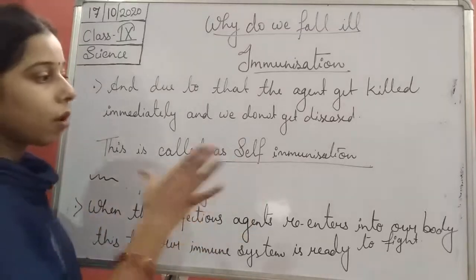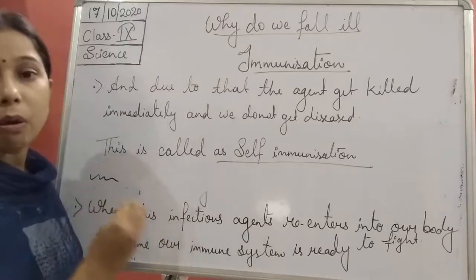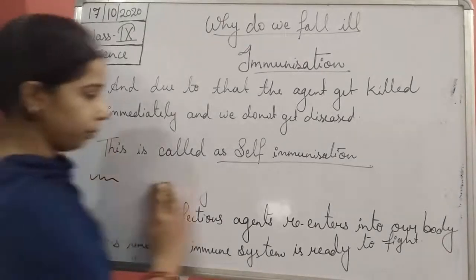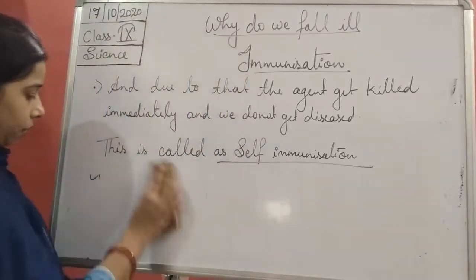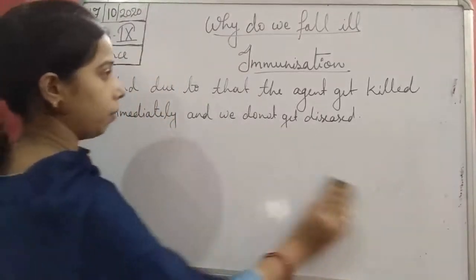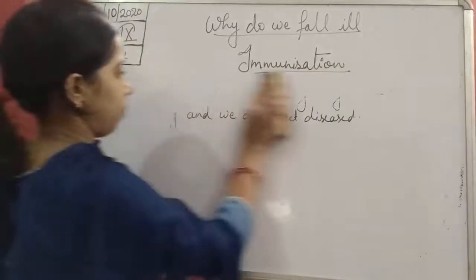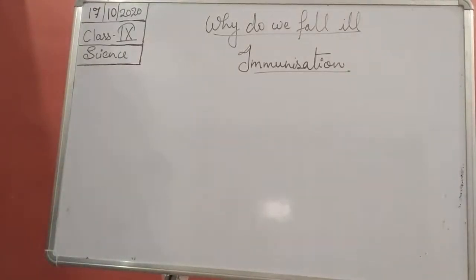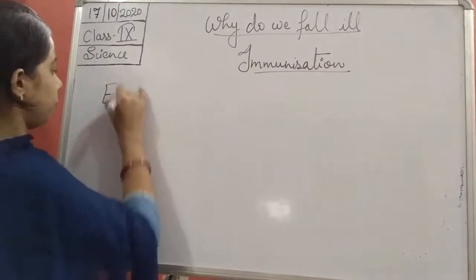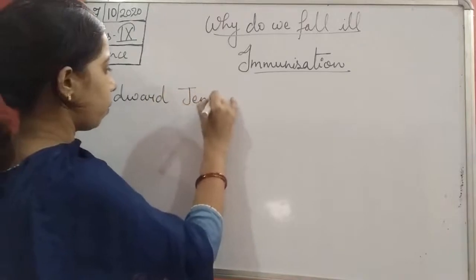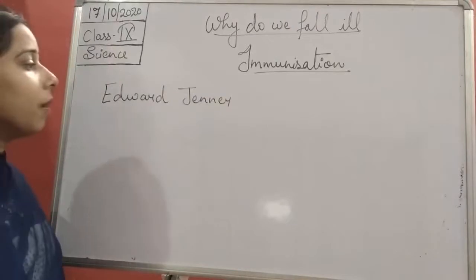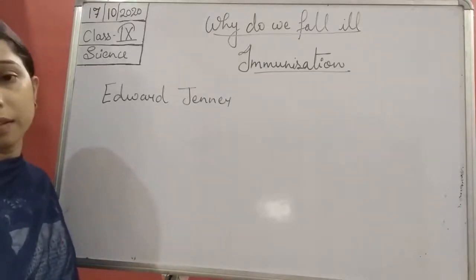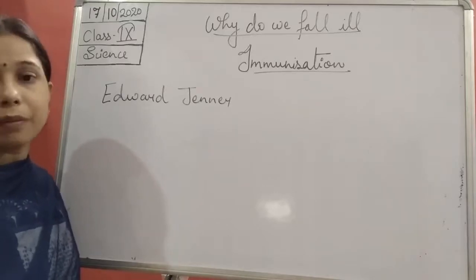Now, this concept of immunization — how did it come about? It came because of Edward Jenner. Let us discuss who Edward Jenner was. Edward Jenner was an English physician. At that time, he was seeing that in his country most of the people were suffering from smallpox.